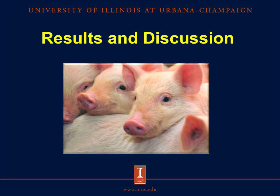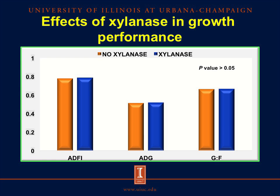Now let's move on to the results of this experiment. I will show the results of the main effects of the enzyme, ingredient, and inclusion levels, because the interactions between these factors were not significant. This slide shows the effects of silenus on growth performance. The orange bar represents pigs fed diets without silenus and the blue bar represents pigs fed diets with silenus. There was no effect of silenus on growth performance parameters, which may be explained by the low inclusion level of rice bran implying low concentration of substrates for the enzyme. There were also no effects of silenus on blood characteristics, TNF-alpha, immunoglobulin A, or PYY concentration.